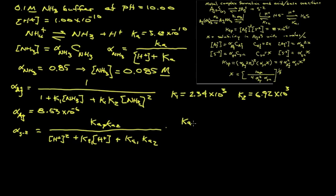Ka1 is equal to 9.63 times 10 to the minus 8, and Ka2 is 1.33 times 10 to the minus 13. Plugging these values in along with hydrogen ion concentration, which is 10 to the minus 10, we find that alpha for the sulfide is equal to 1.33 times 10 to the minus 3. Now we're ready to plug these values in to our equation for X.